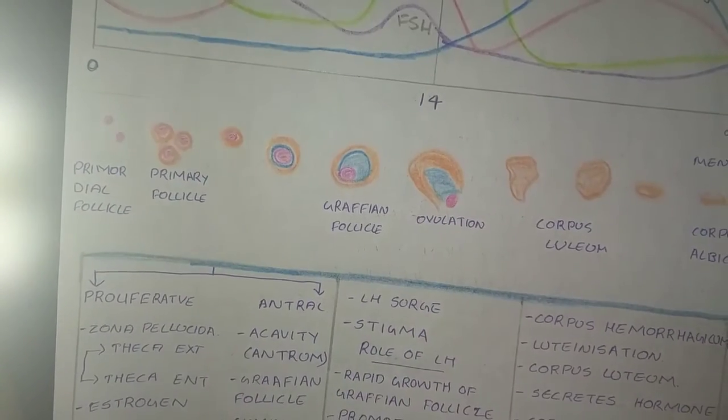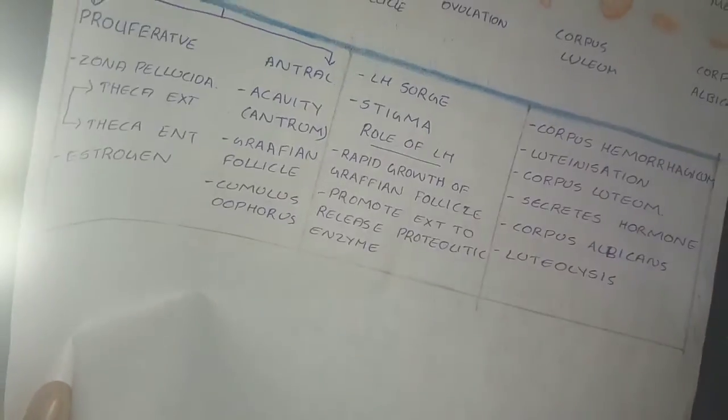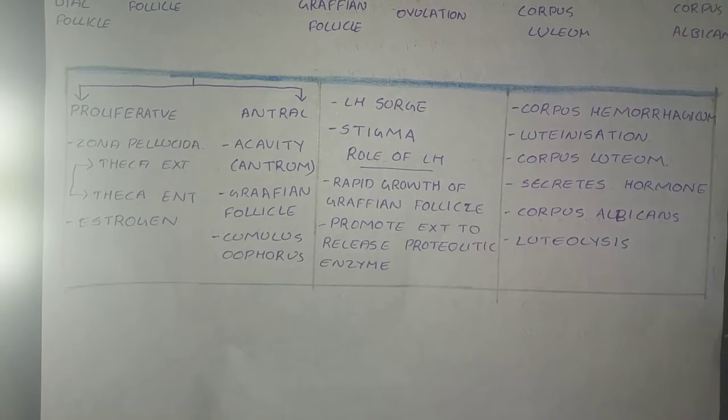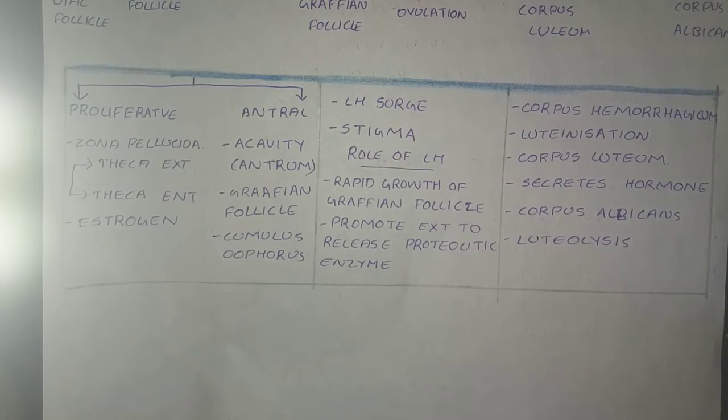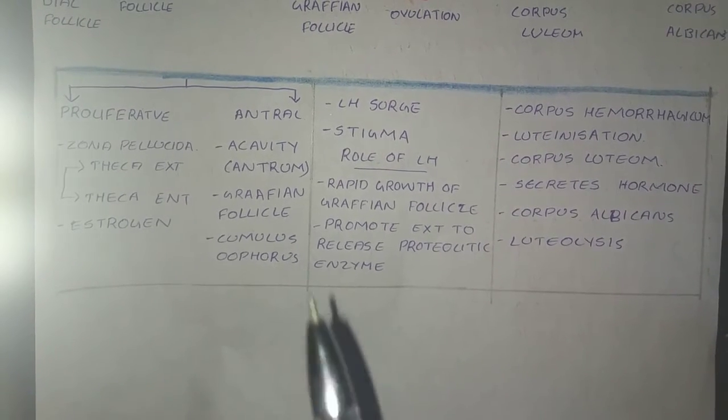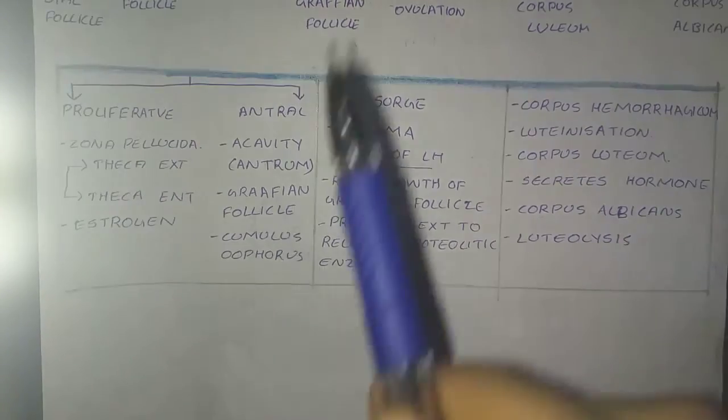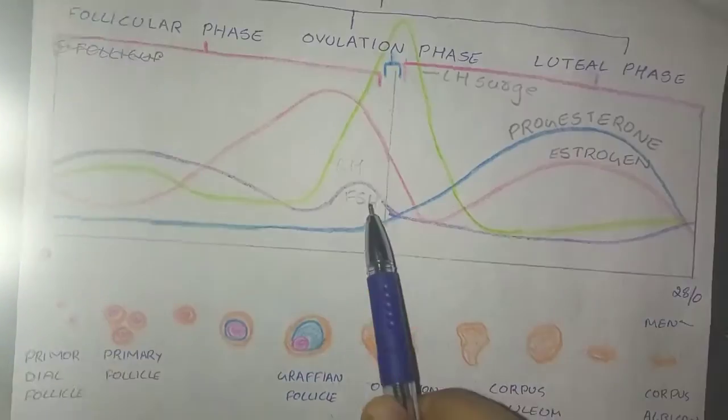Thus occurs a formation of cumulus oophorus, which is a layer that is two to three layers of granulosa cells, and that layer is known as cumulus oophorus. Now for the ovulation phase, which is shown here.